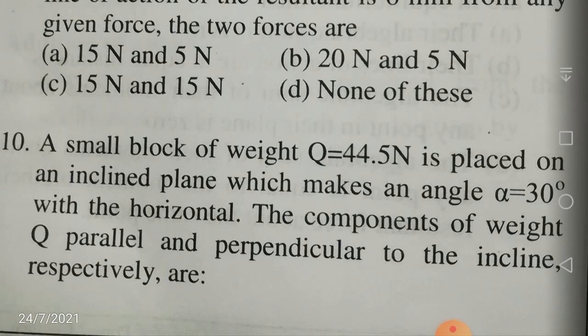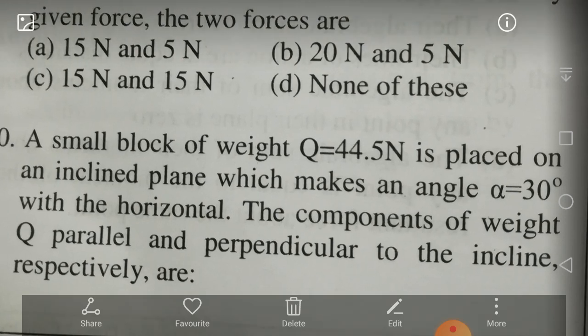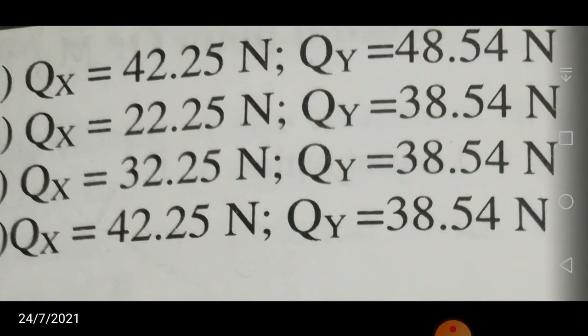So 44.5 into sin 30 and 44.5 into cos 30 are the answers. The component of the weight acting parallel to the plane and perpendicular to the inclined plane are 22.25 Newtons and 38.54 Newtons respectively. So B is the correct option.